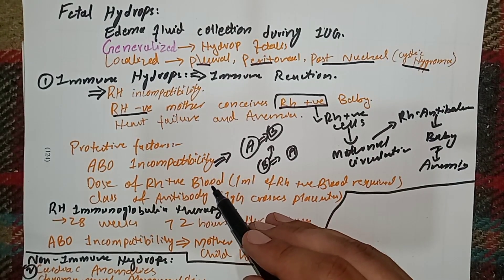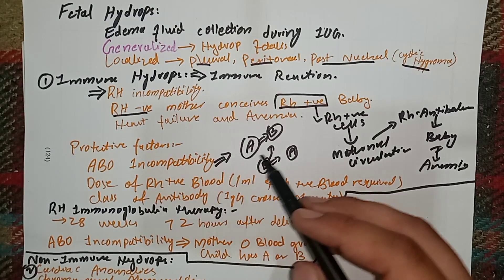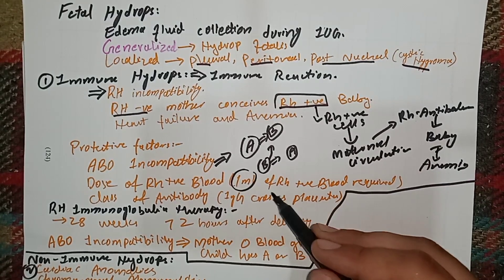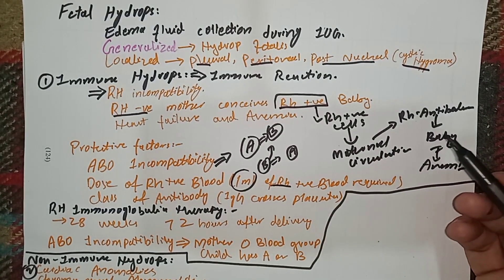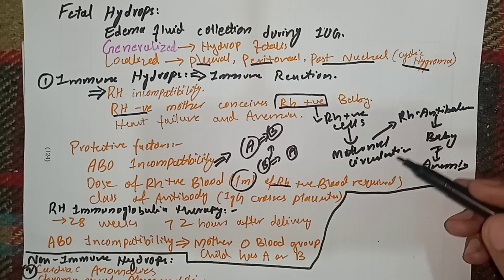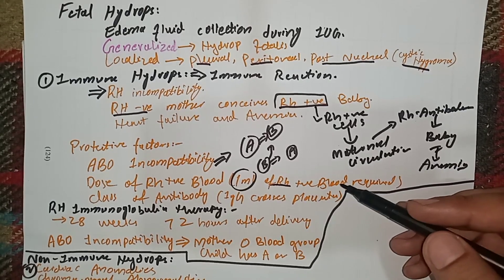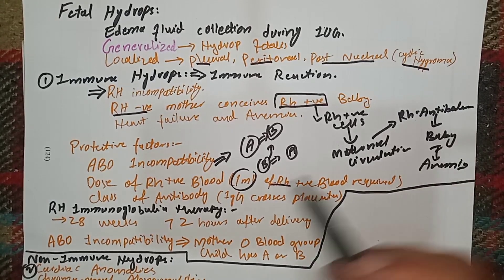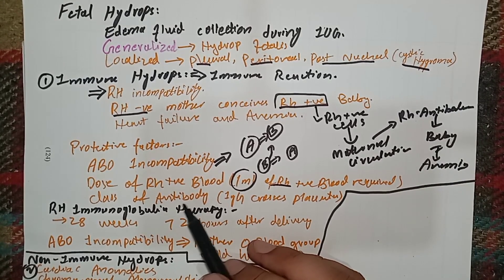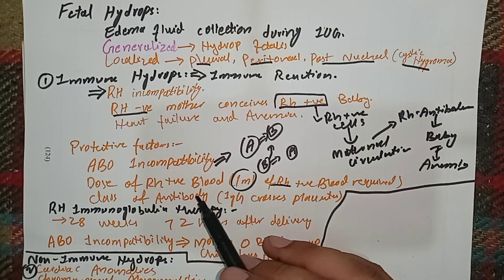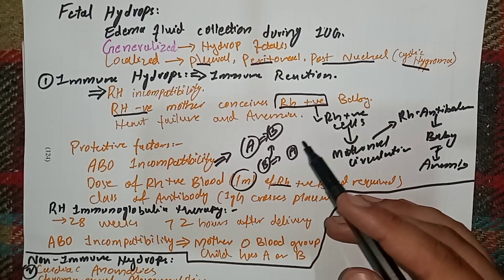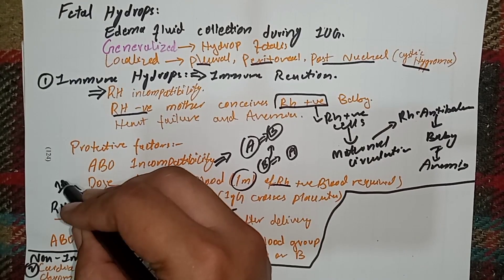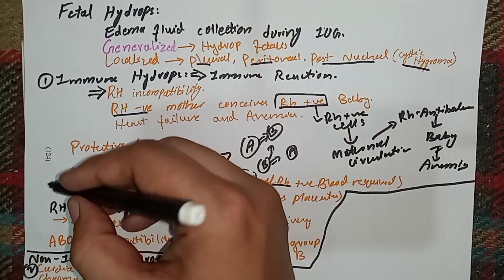If the RH-positive blood cells entering the mother are very few, the immune response may not occur. About 1 ml of RH-positive blood is required to cause this immune response; if less than 1 ml enters the maternal circulation, the immune response may not occur. Additionally, the class of antibodies produced is important. When the mother is first sensitized, the antibodies produced are IgM, which do not cross the placenta.